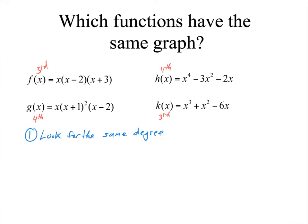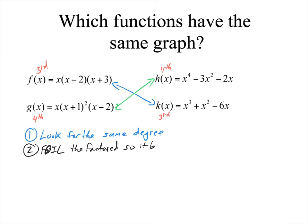In this particular problem, are we okay that these are the same? And aren't these the same because of the degree? But what if the problem was more complicated and gave you a whole bunch more possibilities and we needed to be more precise? So another way to tell if they are the exact same graph would be to FOIL — FOIL stands for first, outside, inside, last.